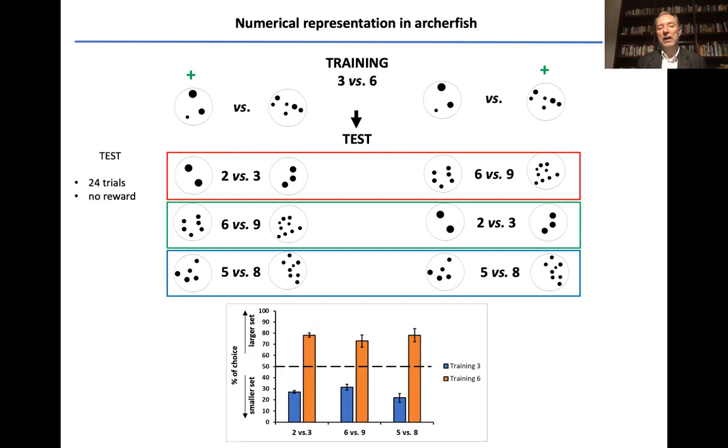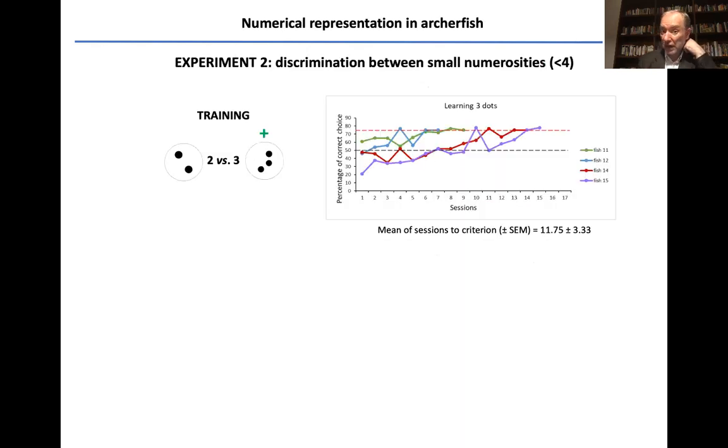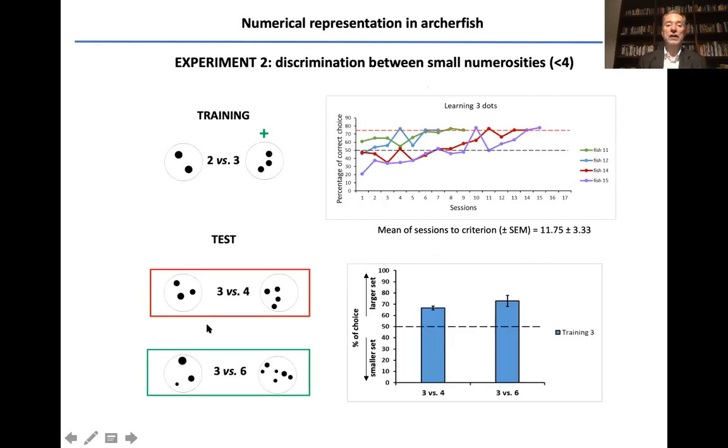So after training three versus six they choose the smaller with different numerosity irrespective of whether it was a numerosity that in absolute terms was reinforced or not reinforced previously. This is true also for small numerosity like two versus three which is shown here that generalizes with three versus four and three versus six.